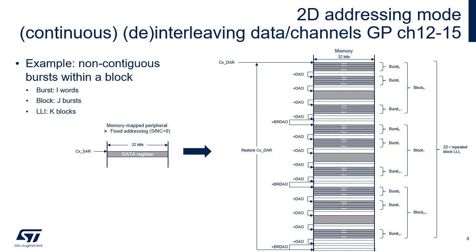The stride between blocks is useful for transferring the contents of a peripheral data register, typically an input FIFO, to non-contiguous buffers in memory. The stride between bursts is useful for interleaving or de-interleaving data, and also for aligning data. Some use cases will be described in the next slide.